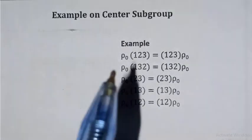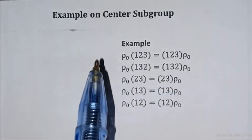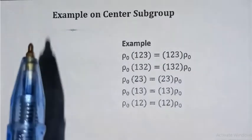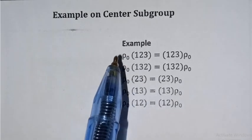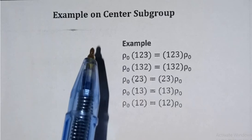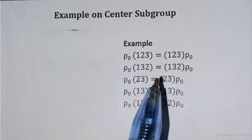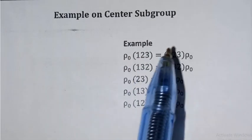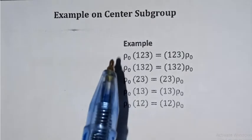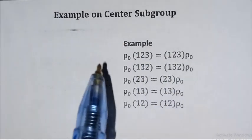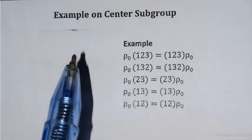Let us look at an example: the center of S3. S3 is the group of permutations. The identity permutation ρ₀, which maps 1→1, 2→2, 3→3, commutes with every element when applied from the left or right, so it satisfies the commutative law with each element of S3.